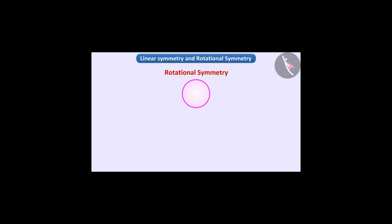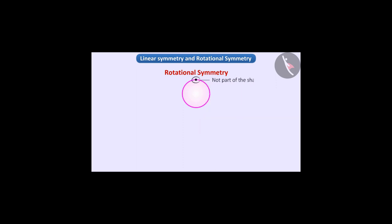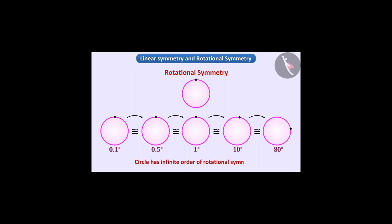Similarly, we will show a point on the circle to check for rotational symmetry, keeping in mind that this point is not part of the shape. We can get the figure exactly as the initial shape by rotating the circle through any angle — like 0.1 degree, 0.5 degree, 1 degree, 10 degree, or 80 degree. So we can say that the circle has infinite order of rotational symmetry.